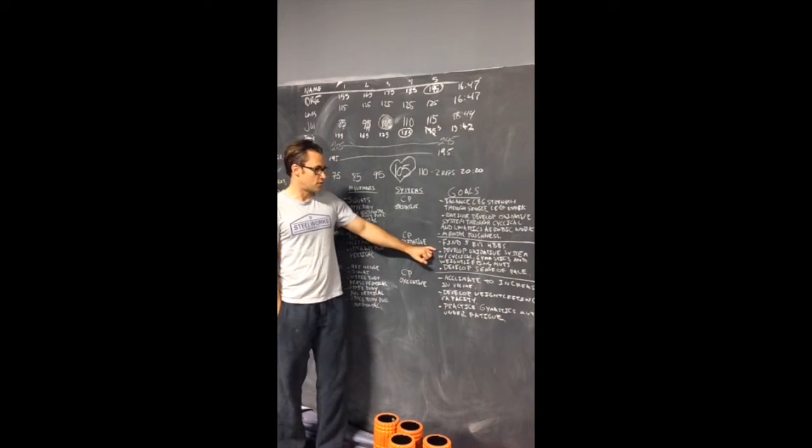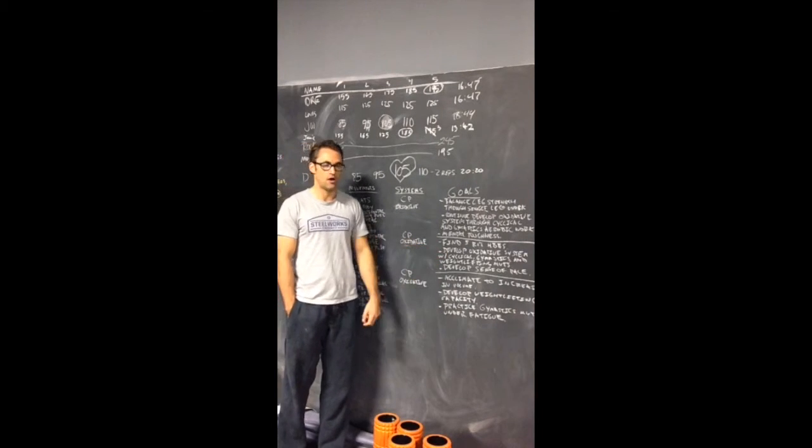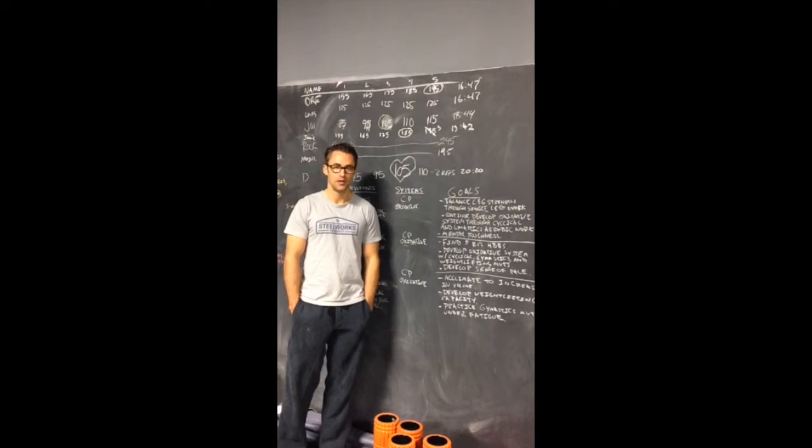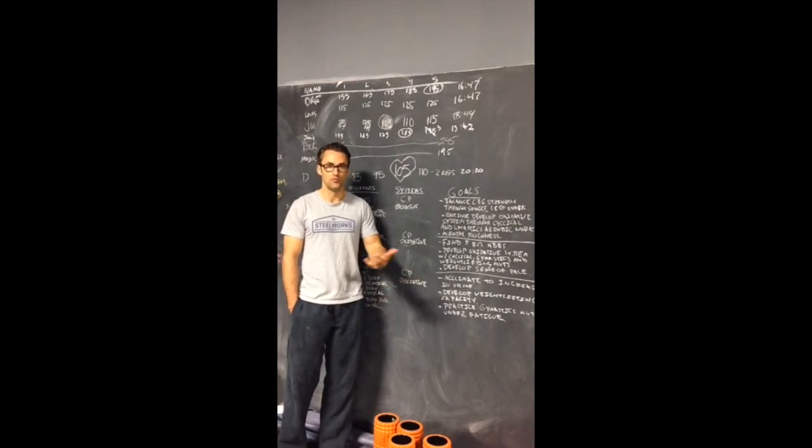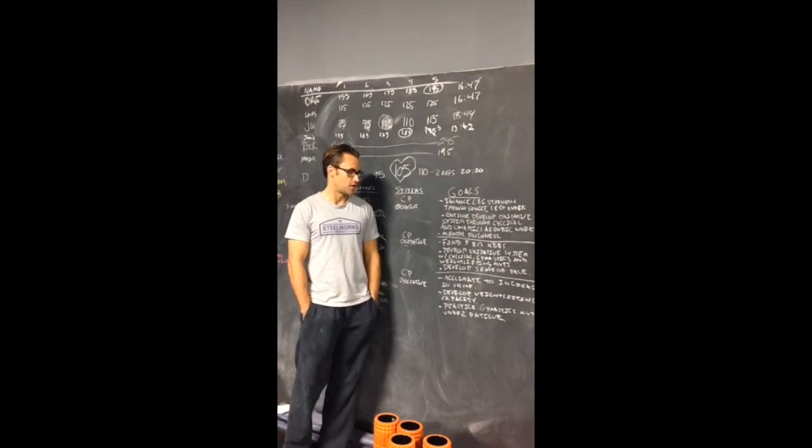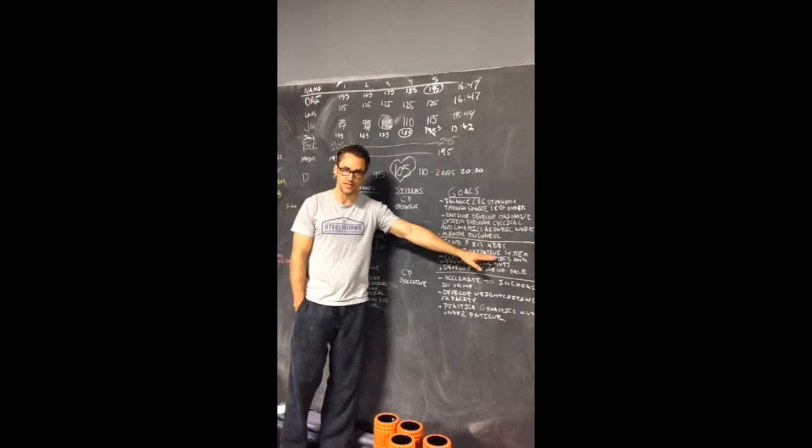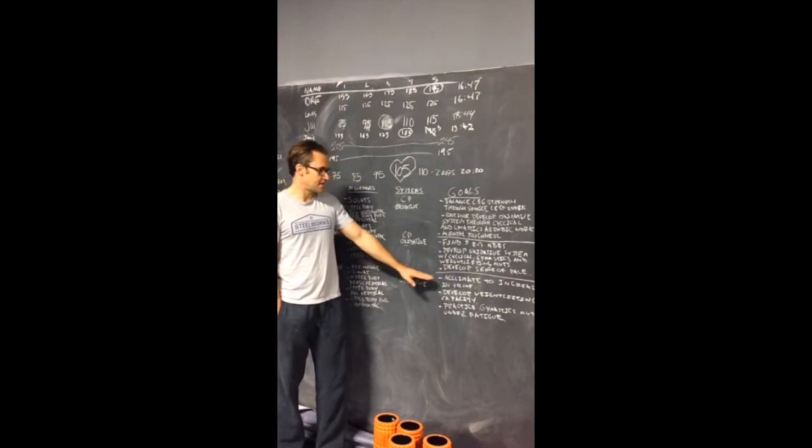The second goal that we were looking for was to develop the oxidative system through some cyclical aerobic pieces, gymnastics, and also some weight lifting movements. Obviously the row, burpees, and clean thrusters are going to do a little bit of different things for you, but all ultimately hoping to develop that oxidative system. And last but not least, we're trying to develop a sense of pace.